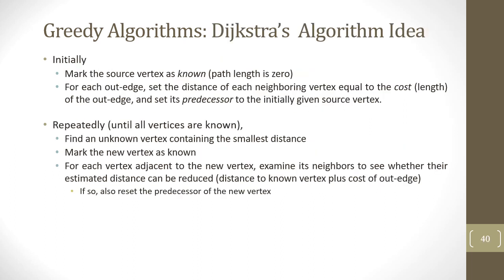How does Dijkstra's algorithm work? Initially, mark the source vertex as known. For each outgoing edge from the source, set the distance of each neighboring vertex equal to the edge weight, and set its predecessor to the source vertex. Then repeatedly, until all vertices are known: find an unknown vertex with the smallest distance, mark it as known, examine its neighbors to see whether the estimated distance can be reduced, and if so, reset the predecessor of that neighbor.